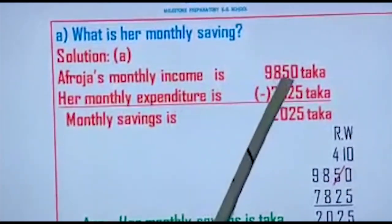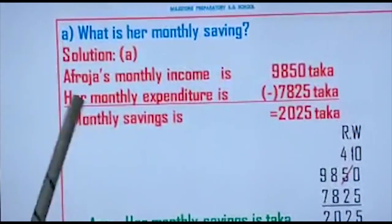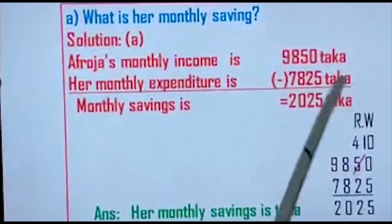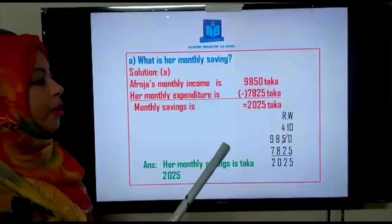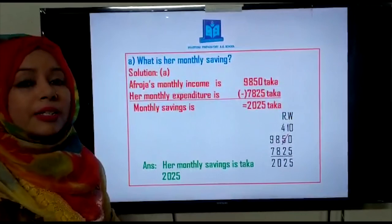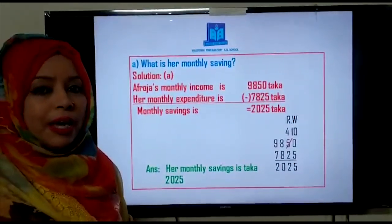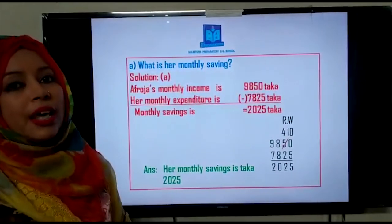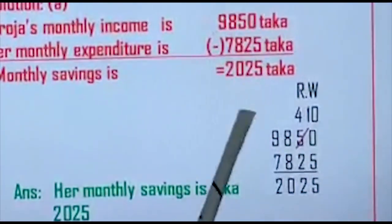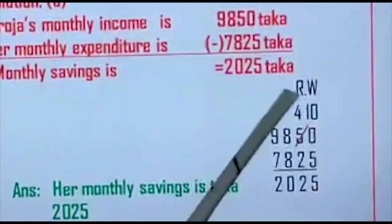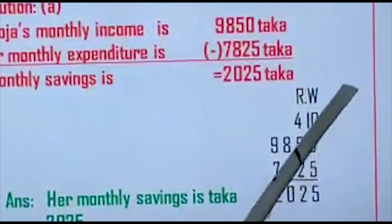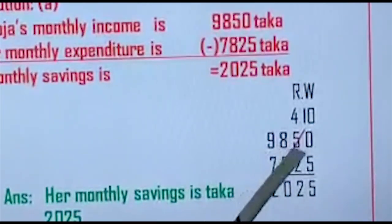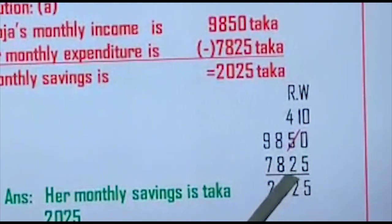The second part: her monthly expenditure is 7,825 Taka. As I told you, for this problem we have to do subtraction because they are asking about savings — monthly savings. We know the rule: income minus expenditure gives us savings. So here I am showing the rough work so that you can keep your writing neat and clean. I have written 9,850 Taka and 7,825 Taka, and now I am doing the subtraction.